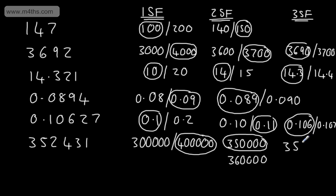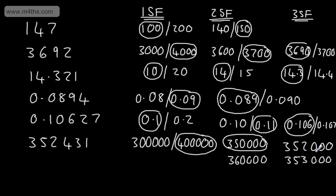Our choices are 352,000 or 353,000. And we're going to round down as the number after it is four. So correct to three significant figures, it is 352,000.